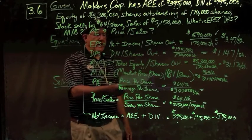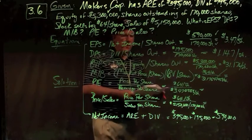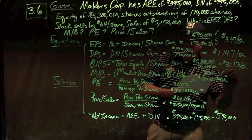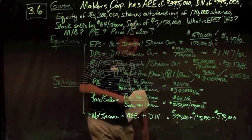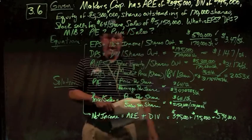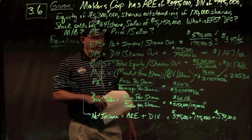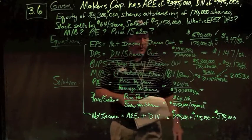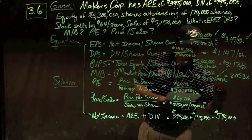Market-to-book ratio is market price per share divided by book value per share: $64 per share divided by $31.17 book value per share gives a market-to-book ratio of 2.053 times — dollars divided by dollars gives units of times, which are very important to track. P/E ratio is price per share divided by earnings per share: $64 divided by $3.47 per share gives a P/E ratio of 18.441 times.